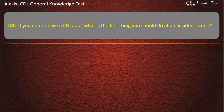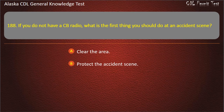Question 188. If you do not have a CB radio, what is the first thing you should do at an accident scene? Clear the area, protect the accident scene, or flag down help. Answer: Protect the accident scene.